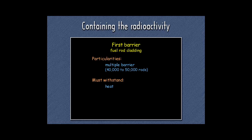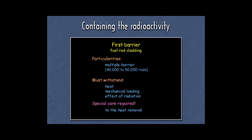The first barrier is subjected to numerous challenges: thermal effects at the boundary between the fuel material and the cooling water, mechanical effects including pressure and vibration, and the effects of intense neutron and gamma radiation continuously passing through it. To preserve the cladding, it must be ensured that heat is removed at all times as effectively as possible; otherwise the result will be melting of this first barrier.